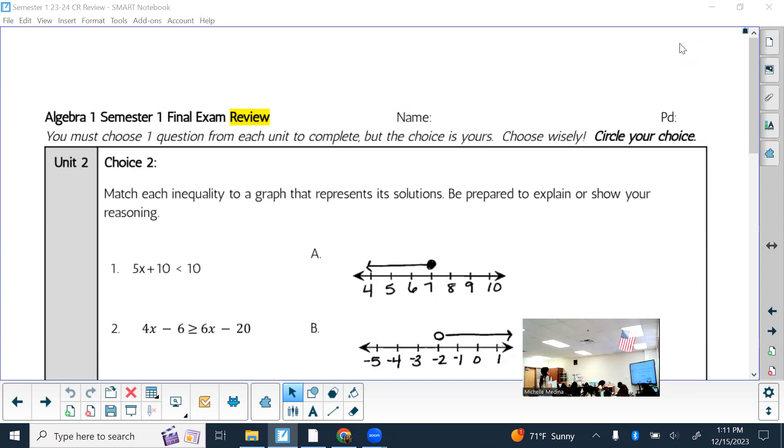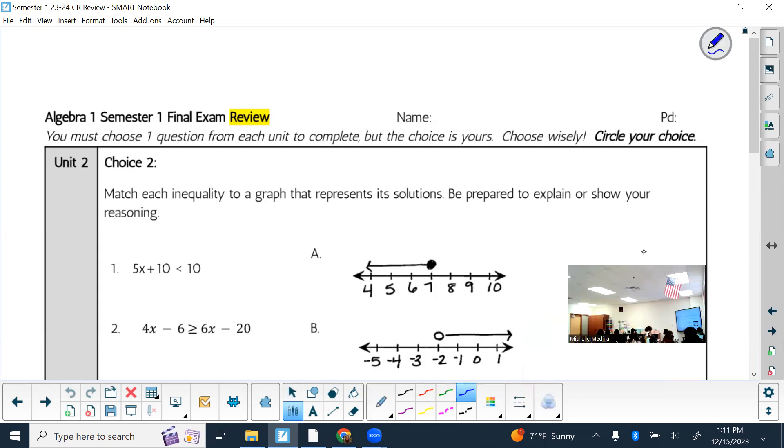So you had to match each inequality to the graph that represents its solutions and be prepared to explain or show reasoning. Reasoning could be work shown. So work shown does not count as, like, in depth. That would not be work shown. Granted, if that's all you know how to do to figure out what the answer is, then fine. At least that'll give you some points. You just might lose points on the showing, reasoning, or work.